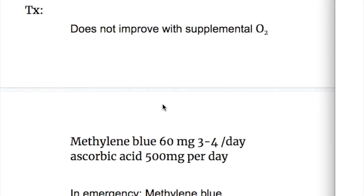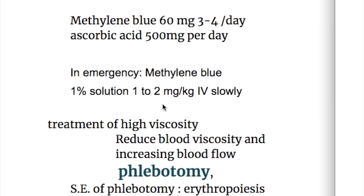The treatment of methemoglobinemia does not improve with supplemental oxygen. Treatment depends on the condition of the patient. Regularly, methylene blue is given at 60 mg, 3 to 4 times a day. The second drug used is ascorbic acid (vitamin C) 500 mg per day. In an emergency setting, methylene blue 1% solution is given at 1 to 2 mg per kg IV slowly.